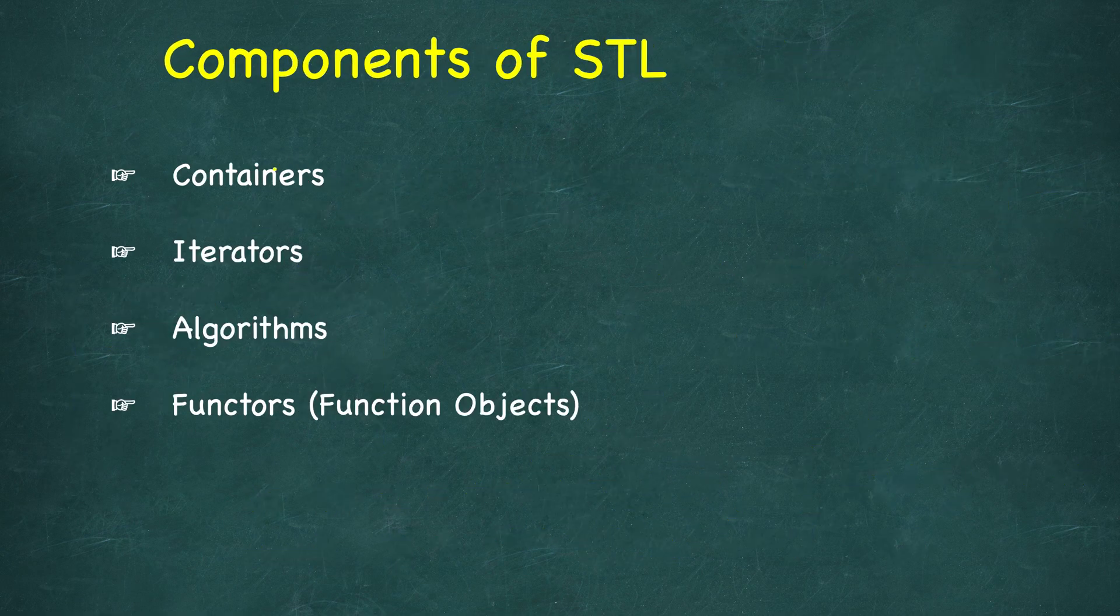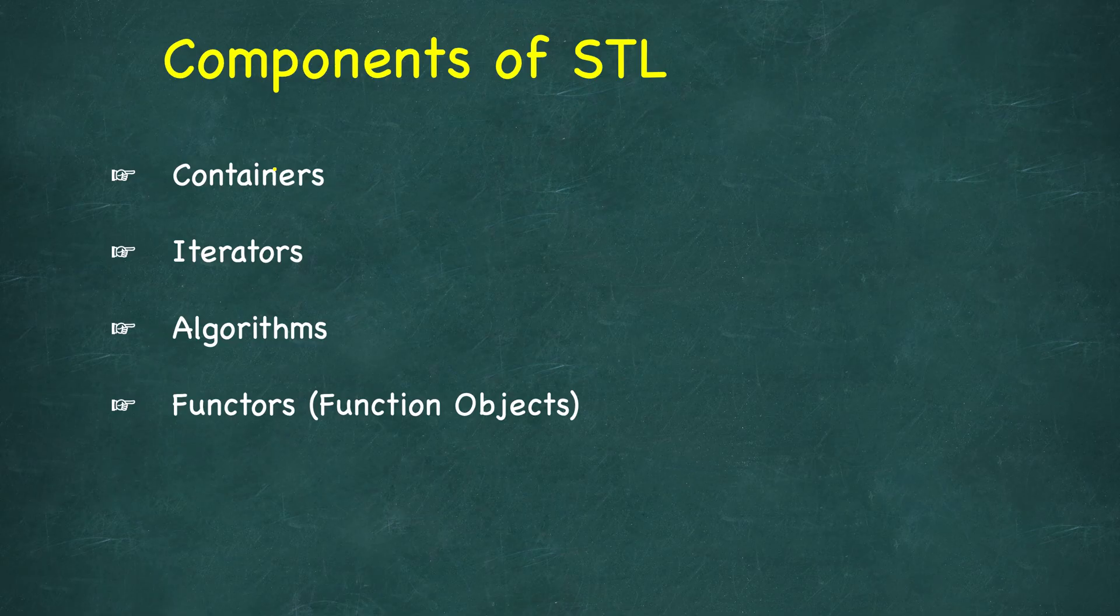Now let's continue our discussion and see what are the different components of STL. There are four components of STL: containers, iterators, algorithms, and functors. Containers are just array-like data structures.